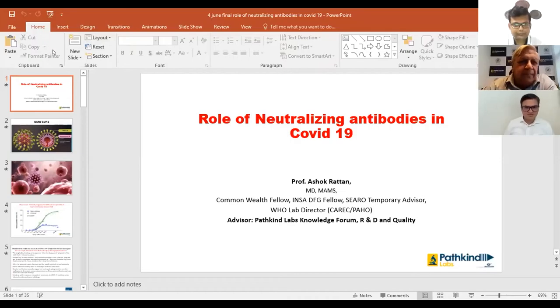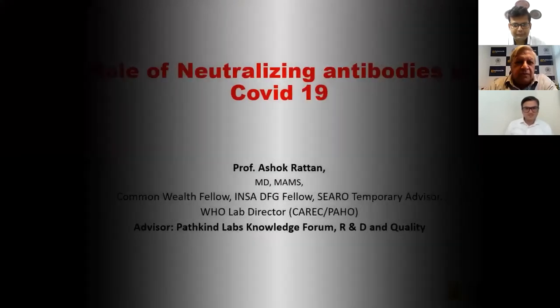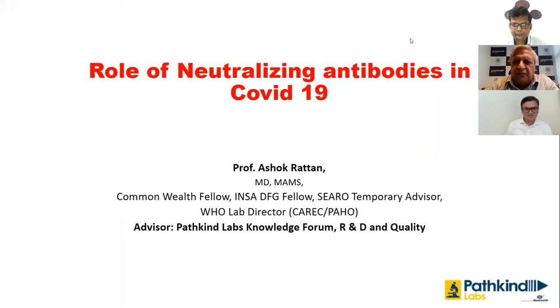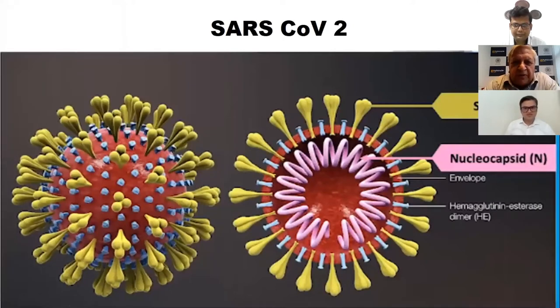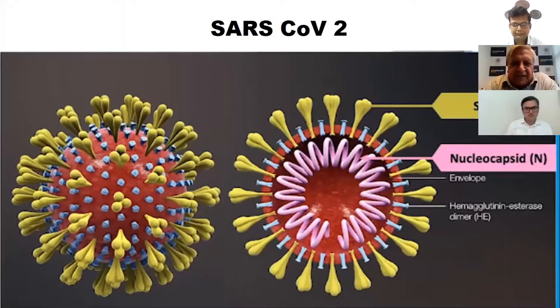Thank you, Mr. Mahajan, for your kind words. I'm grateful to J.Mitra for giving me this opportunity. Let me concentrate on the role of neutralizing antibodies in COVID-19. We know that the virus, SARS-CoV-2, has two very important antigens. The most abundant one is the nucleocapsid protein, which is highly immunogenic but enclosed inside the virus. For protection, we need antibodies against the spike protein, which juts outside, and it is against spike protein that protective antibodies are raised.